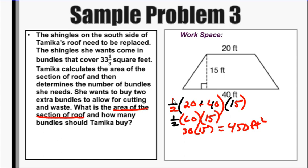Now we need to know how many bundles should Tamika buy. So to take the area, the total area of the roof—so 450 divided by what each bundle covers. Each bundle covers 33 and 1/3. So if we just estimate this, because it's 33 and 1/3, that's closer to 33 square feet. If I divide that by 33, that gives me 13.6.